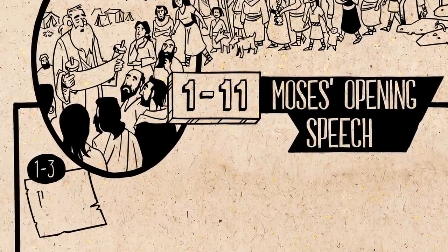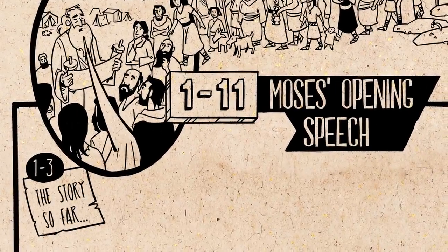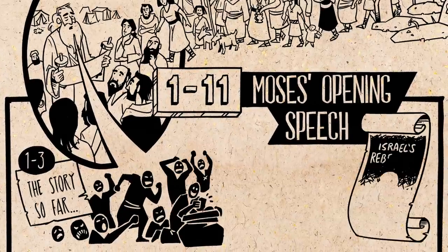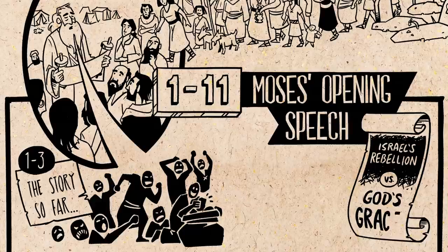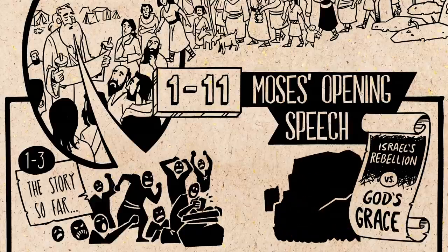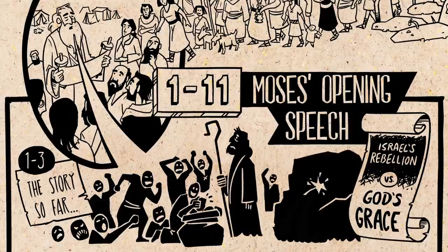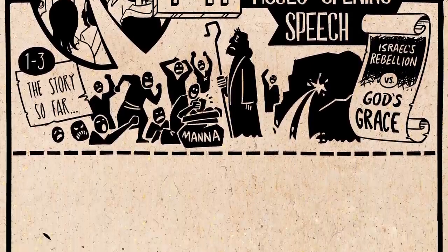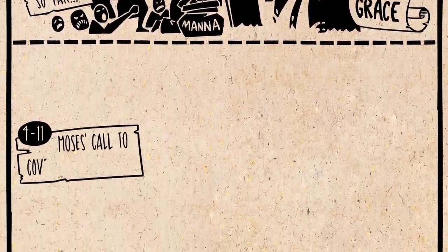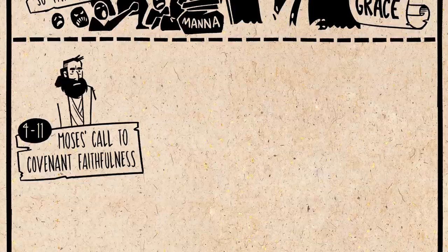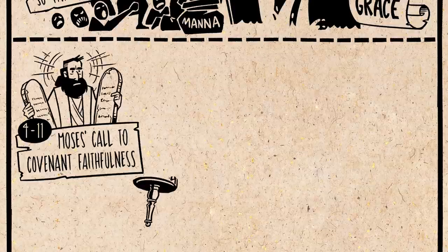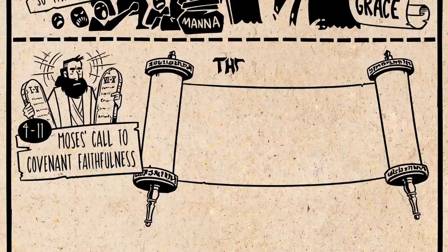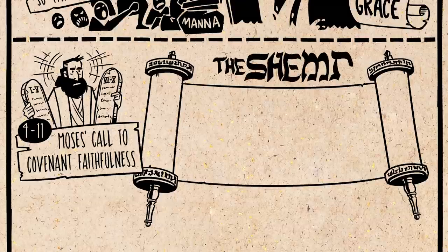Moses first of all summarizes the story so far, and he highlights how rebellious the previous generation was in contrast with God's constant grace and provision in the wilderness. God did bring his justice on them, but he did not abandon his covenant promises. After this comes a series of very passionate sermons where Moses calls on this new generation to be more faithful than their parents were to the covenant. He reminds them of the Ten Commandments, and then the centerpiece of the section is a famous line called the Shema.